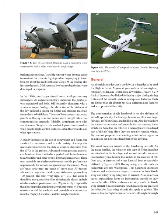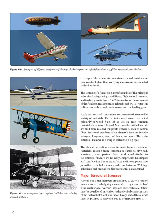This handbook discusses features and maintenance aspects common to both fixed-wing and rotary-wing categories of aircraft, and in certain cases, explanations focus on information specific to only one or the other. Glider airframes are very similar to fixed-wing aircraft, and maintenance practices described for fixed-wing aircraft also apply to gliders. The airframe of a fixed-wing aircraft consists of five principal units: the fuselage, wings, stabilizers, flight control surfaces, and landing gear. Helicopter airframes consist of the fuselage, main rotor and related gearbox, tail rotor, and the landing gear.